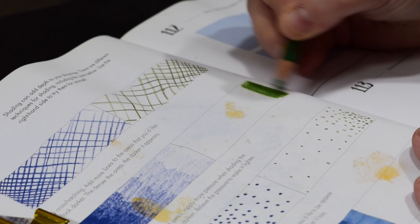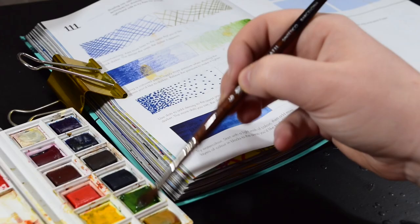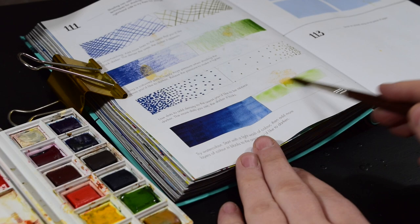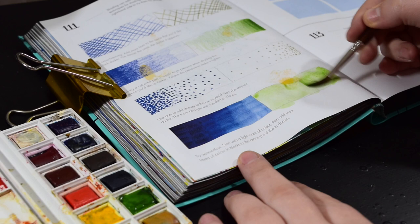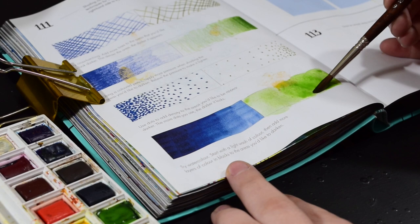And then finally they want us to use a bit of watercolor, so they're asking us to do a light wash of watercolor to start with and then you add some layers of color blocks to the areas that you want to darken. They are all different techniques that I do tend to use. I really enjoy doing dots. It's really fun, and of course you know I'm very used to watercolor.